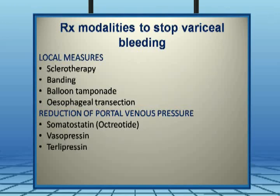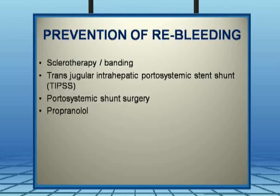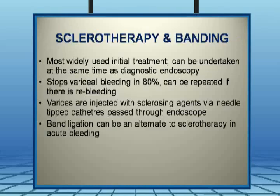Modalities to stop variceal bleeding include local measures and measures to reduce portal pressure. Local measures include sclerotherapy, band ligation, balloon tamponade, and esophageal transection. Portal venous pressure can be reduced using octreotide, somatostatin, vasopressin, or terlipressin. Prevention of re-bleeding involves sclerotherapy, TIPS, portosystemic shunt surgery, and long-term oral propranolol. Sclerotherapy and banding are the most widely used initial treatments, stopping approximately 80% of variceal bleeds.